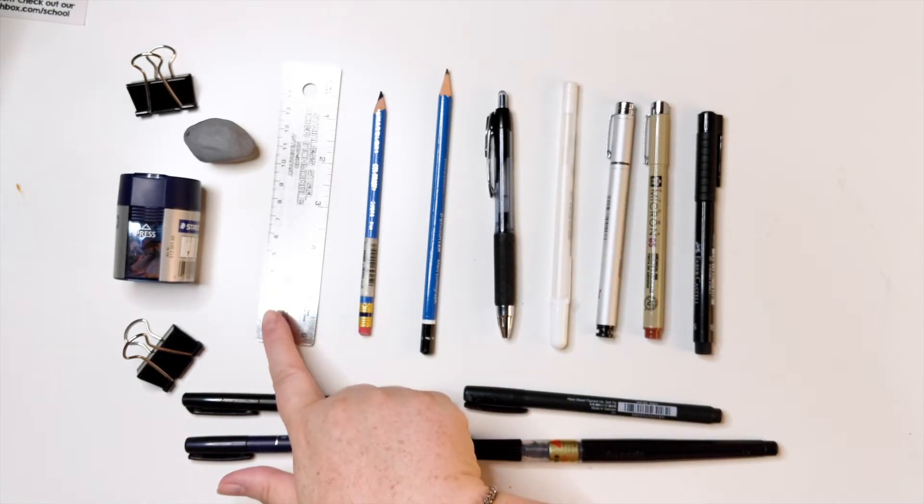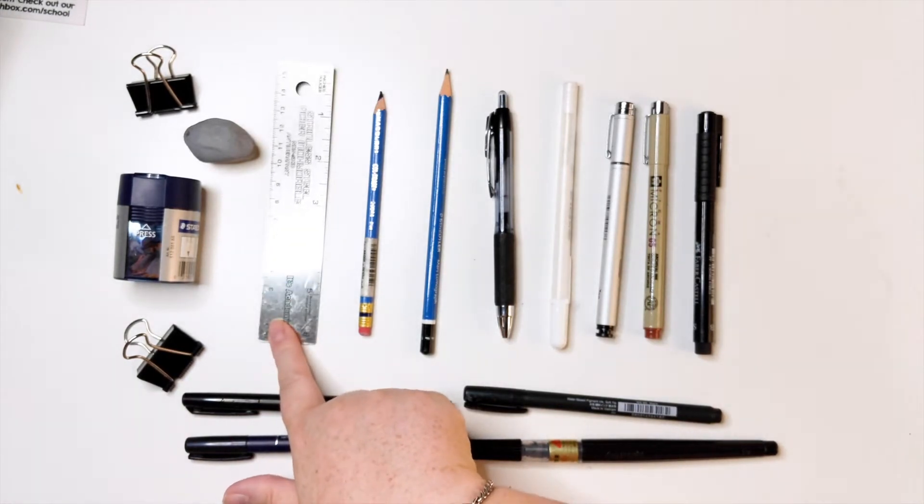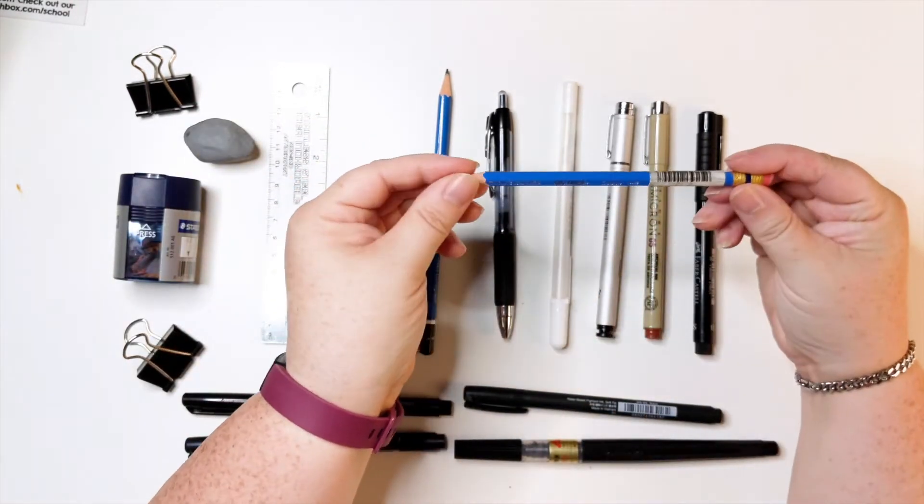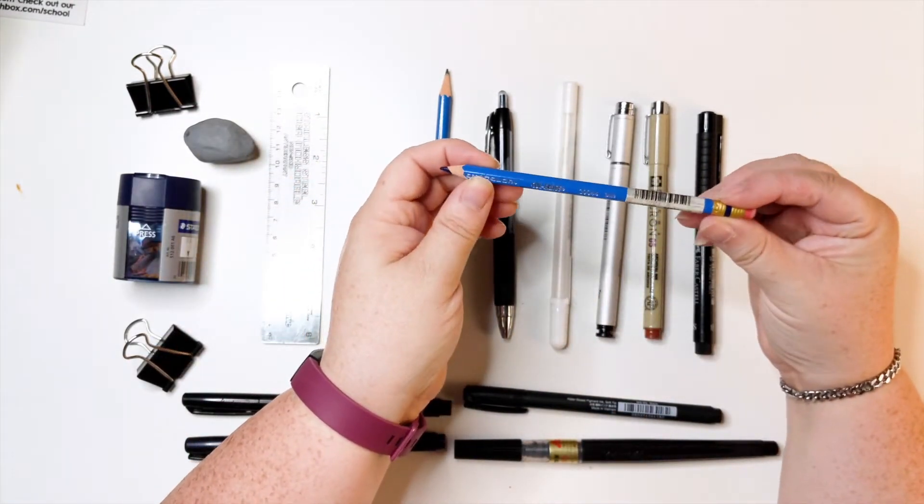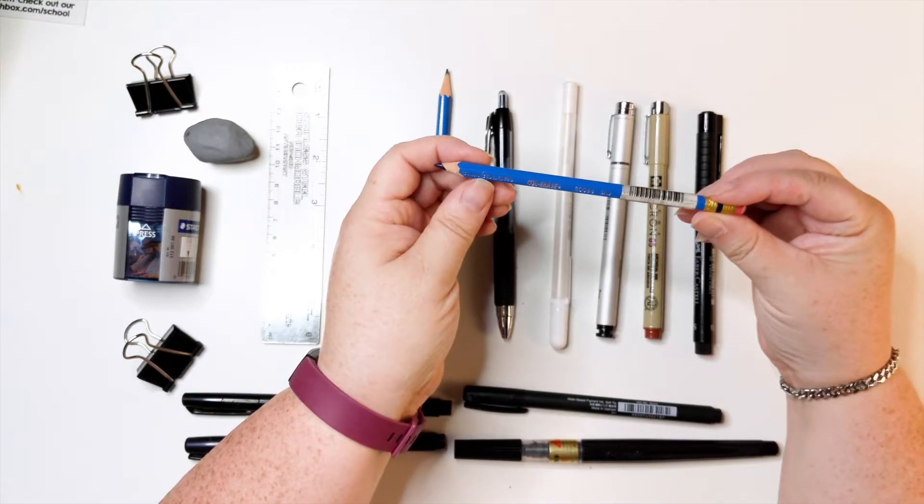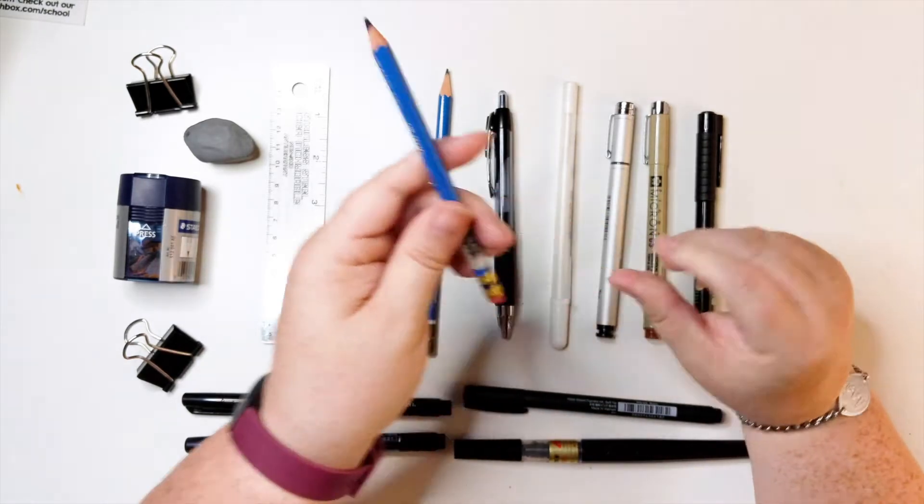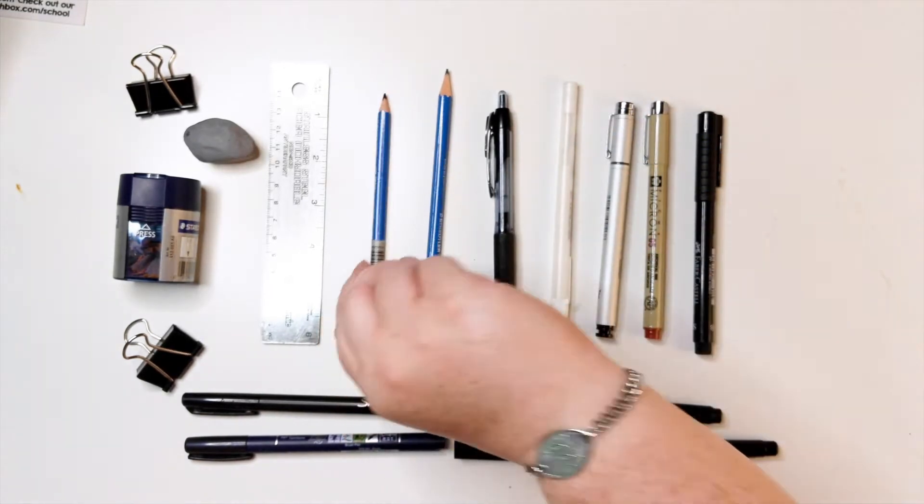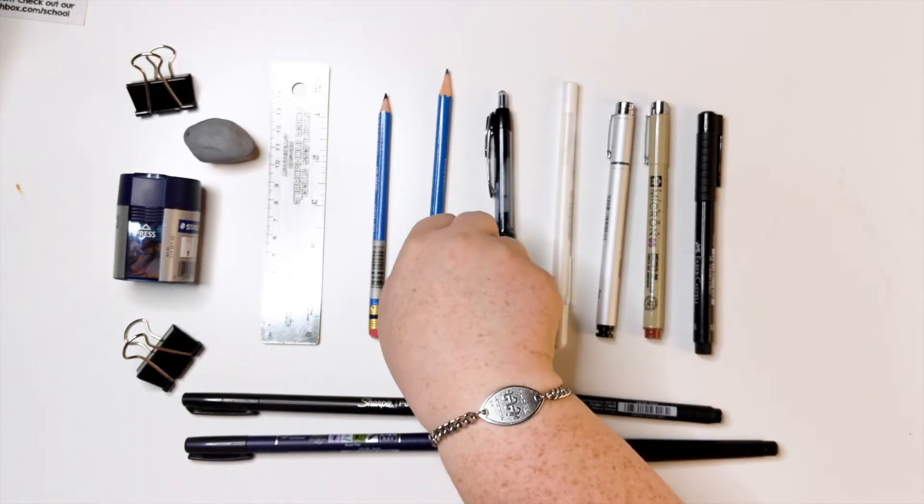I also keep a metal ruler. This blue col-erase pencil. It's Prismacolor. I find these are handy when you're going to ink over things because they seem to just sort of disappear and they erase easily as well.